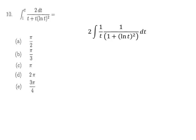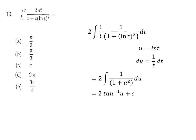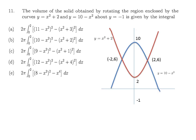For question 10, we rearrange the integral and use substitution with u = ln(t). Then du equals 1/t dt. The resulting integral has the form of the anti-derivative of arctan, so after integrating and substituting back the original variable, we apply the upper and lower limits to get π/2.